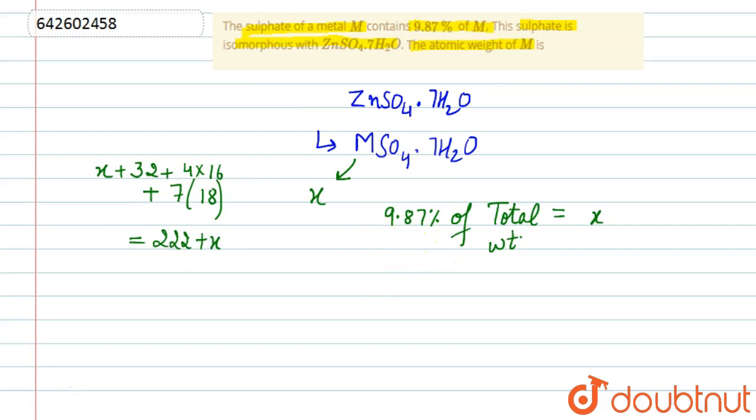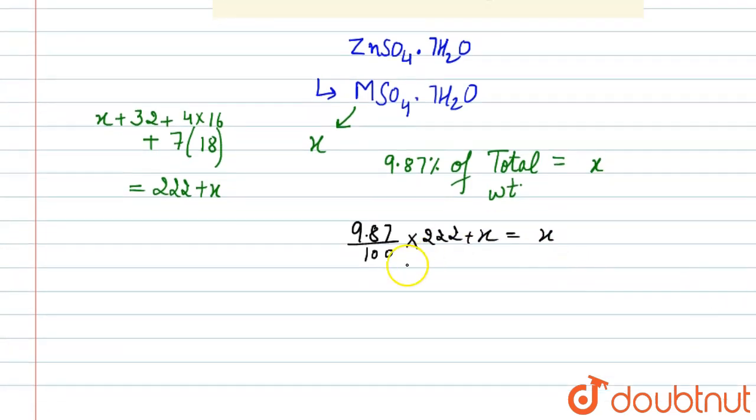Let us solve this: 9.87 divided by 100 of the total weight, that is 222 plus X, will be equal to X. After rearranging, 9.87 times (222 plus X) is equal to 100X.